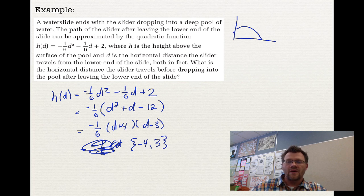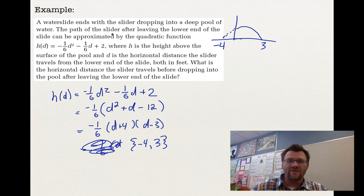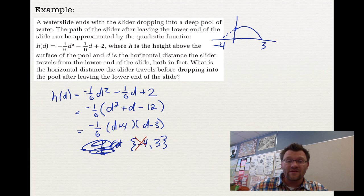Looking at the parabola sketch — which opens downward — the two x-intercepts are at negative 4 and positive 3. However, in this real-life situation a horizontal distance cannot be negative 4, so that answer is extraneous. Therefore the slider travels a horizontal distance of 3 feet before dropping into the pool.